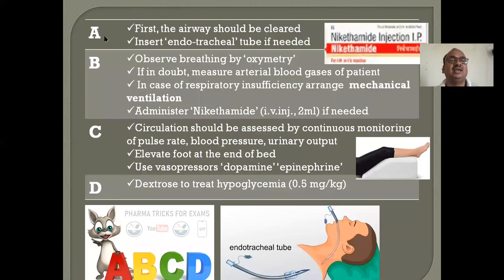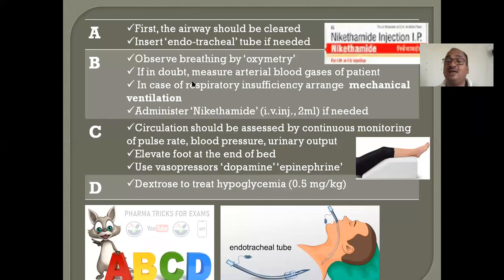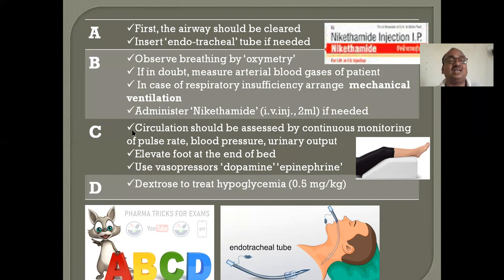Now first we will see ABCD poisoning treatment. A stands for airway — it should be clear. Otherwise oxygen supply will be gone — no oxygen — and immediately the patient will die, not due to the poison but due to lack of oxygen. If the airway tract is not clear, insert the endotracheal tube — this is the endotracheal tube. Insert it because the path is not clear. From the tube, the patient can easily take oxygen.